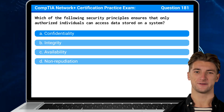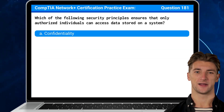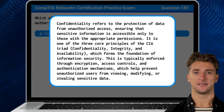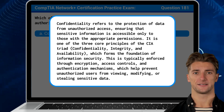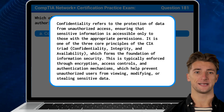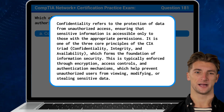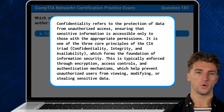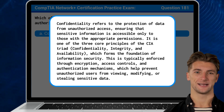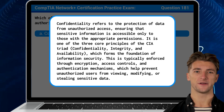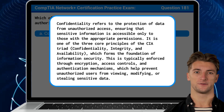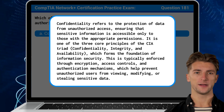The answer is A: Confidentiality. Confidentiality refers to the protection of data from unauthorized access, ensuring that sensitive information is accessible only to those with the appropriate permissions. It is one of the three core principles of the CIA triad — confidentiality, integrity, and availability — which forms the foundation of information security.